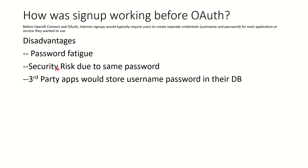There was another security risk: you had to trust third-party apps to store your username and password, without really knowing how seriously they took security. You were accepting the risk of trusting them. These two security issues — along with password fatigue — were all addressed by OAuth.